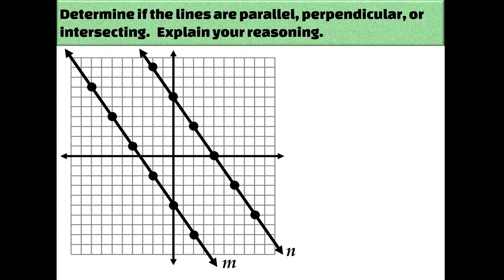Let's take a look at a few examples and determine whether or not the lines are parallel, perpendicular, or neither — meaning they're just intersecting. Based on that information, what kind of transformation would it take to get from line m to line n? To determine this, we need to know the slopes of both lines. When they've been graphed in the coordinate plane, you can just count. Starting at one point on the line, I go down three and to the right two, so the slope of line m is negative three halves.